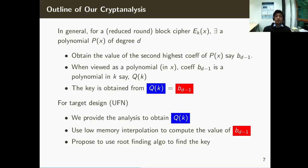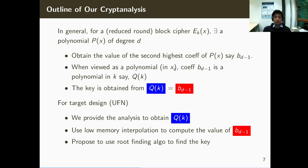Let me give an outline of our cryptanalysis method. For any block cipher with some unknown key K — fixed but not known to the adversary — you can always find a polynomial P(x) having a certain degree D. This polynomial can be found using the interpolation method. However, we are not interested in interpolating the entire polynomial; we are interested particularly in the second highest coefficient of this polynomial. Once you obtain the value of this second highest coefficient using low memory interpolation, you can do something more to recover the key.